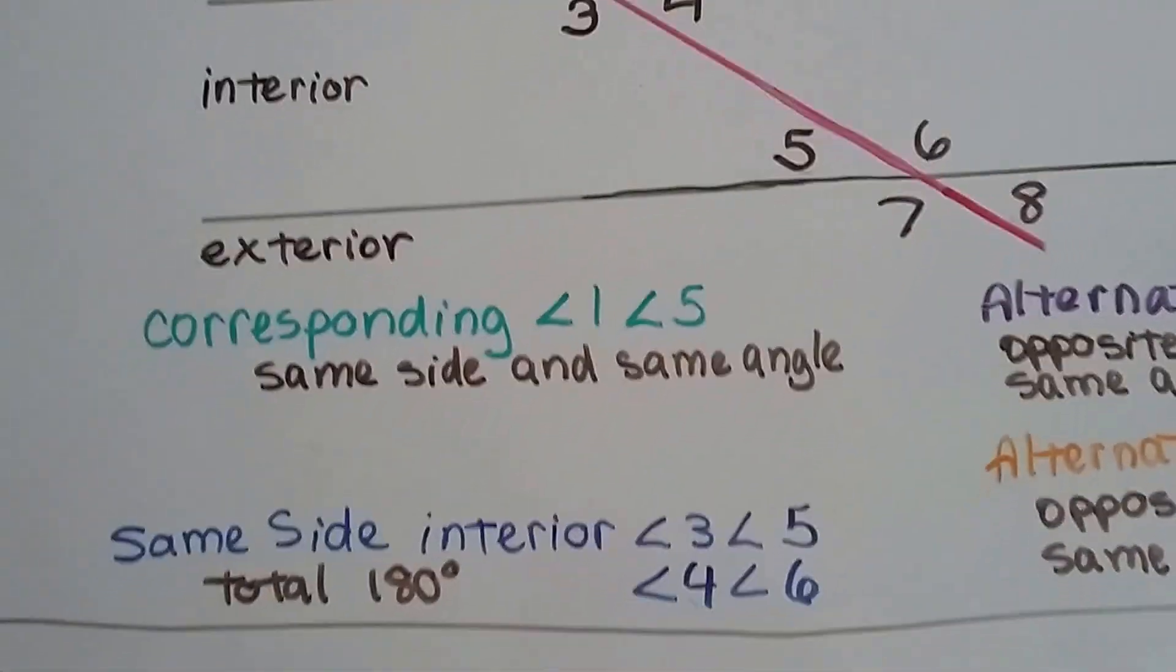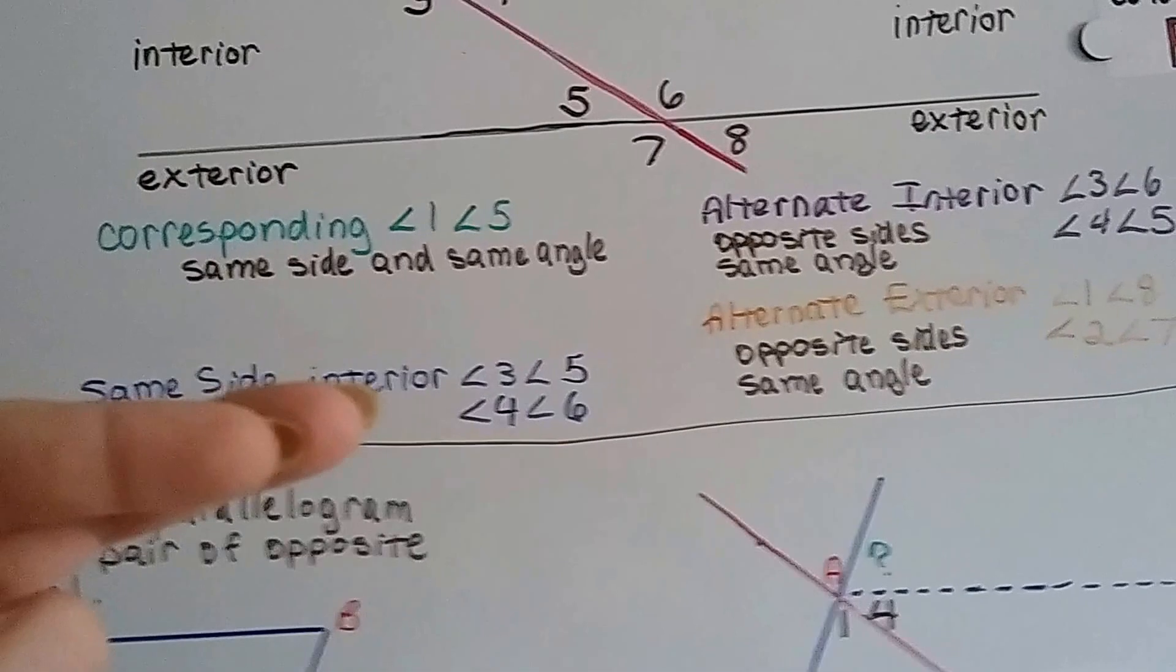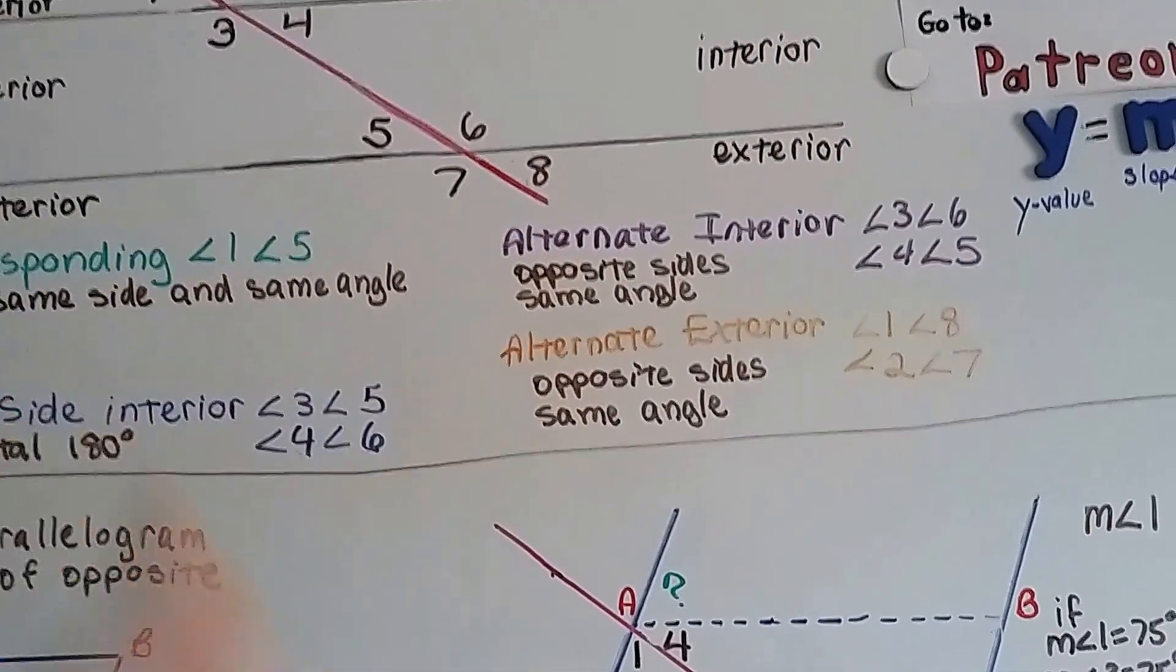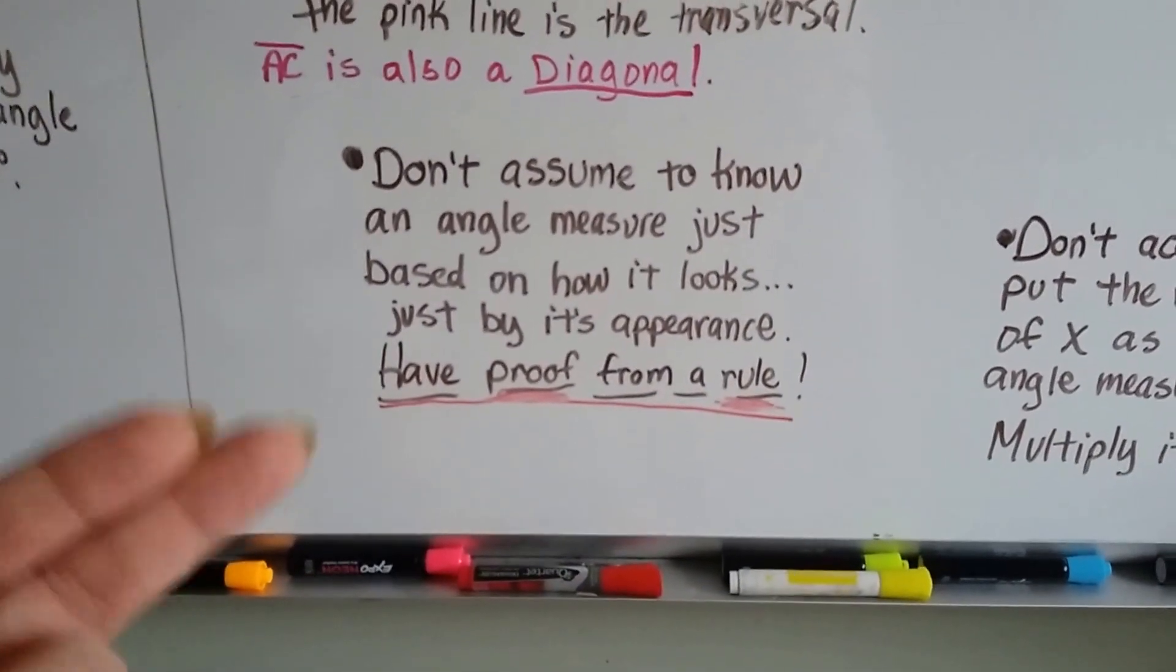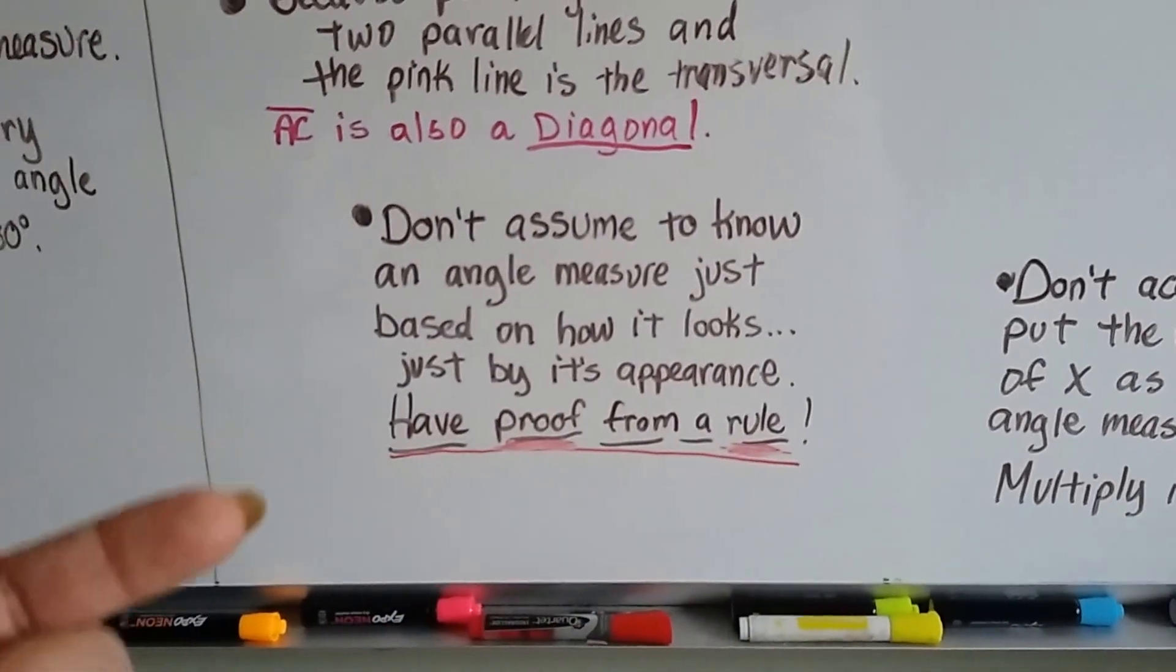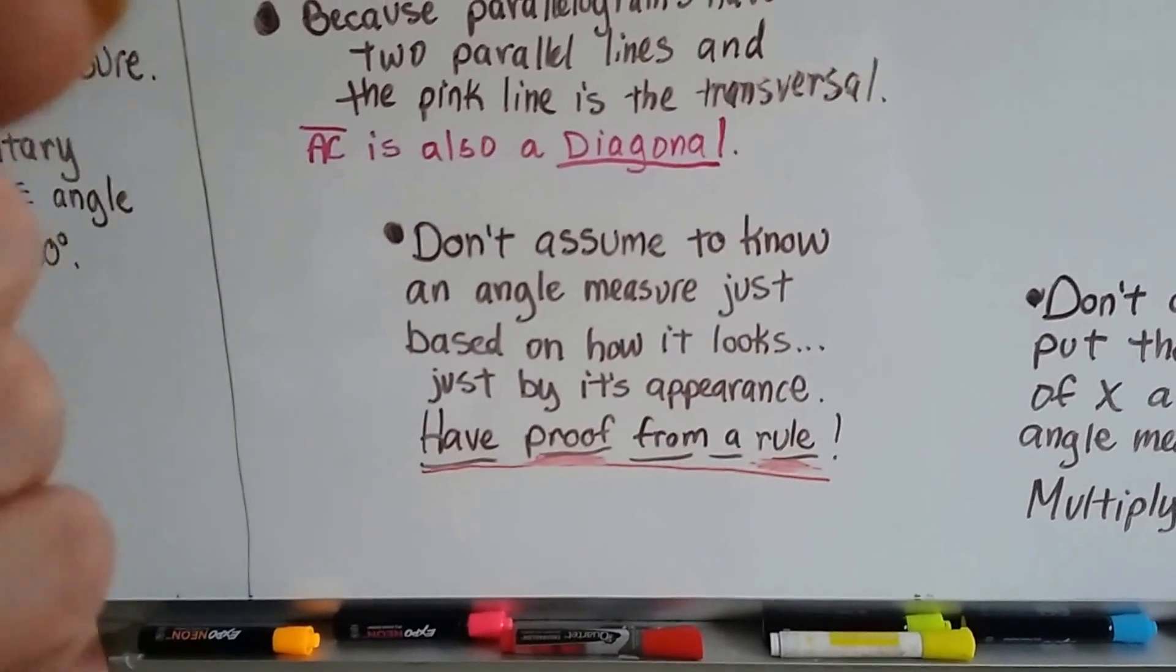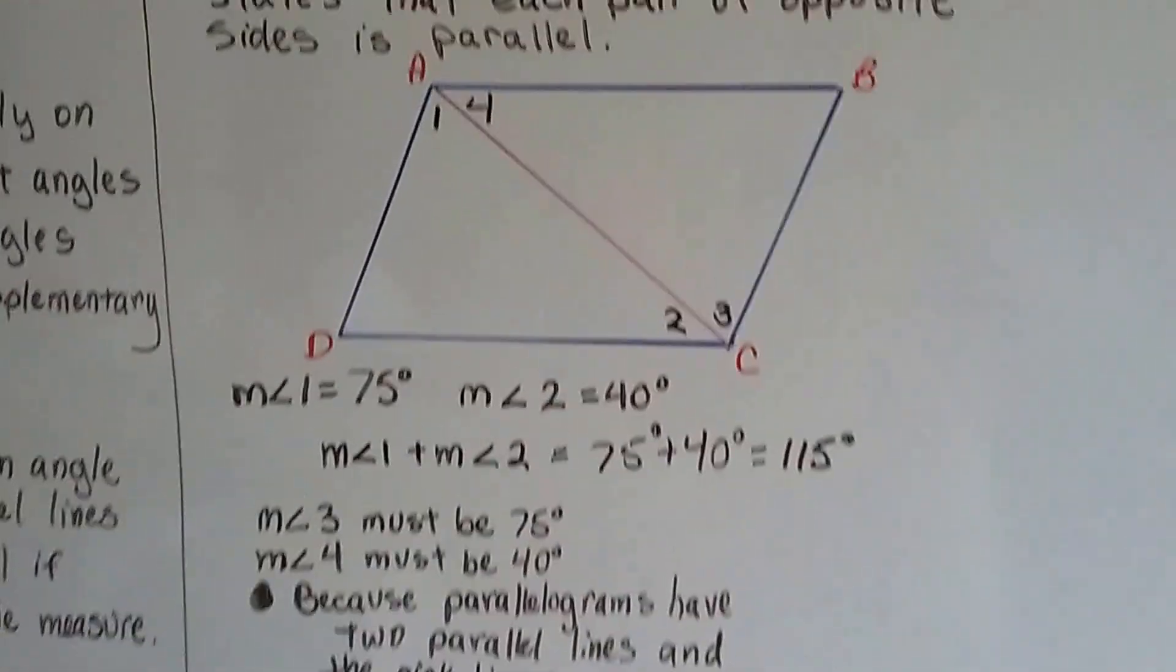So we also need to remember what corresponding angles are, same side interior angles, alternate interior and alternate exterior angles are, because we don't assume to just know what an angle measure is just based on how it looks. We have to have proof from a rule. So we have to say it's that angle measure because of alternate interior angles. We've got to have proof.